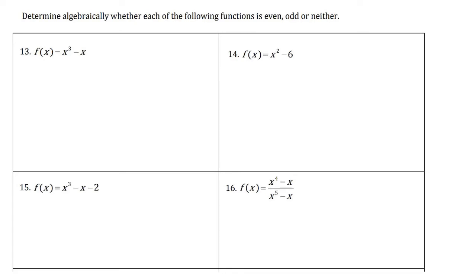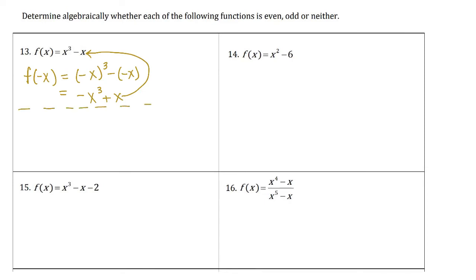Now we determine algebraically whether functions are even or odd. We check f(−x) first — all tests start with that. For problem 13, we have (−x)³ − (−x), which simplifies to −x³ + x. Comparing to the original, it is not the same, so it is not even. To check odd, we take the negative of the original function: −(x³ − x) gives −x³ + x, which does match. So this is an odd function.